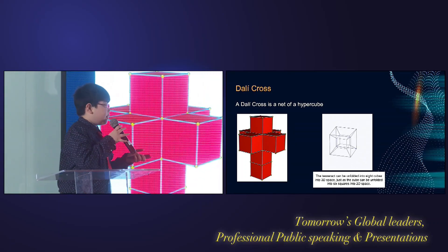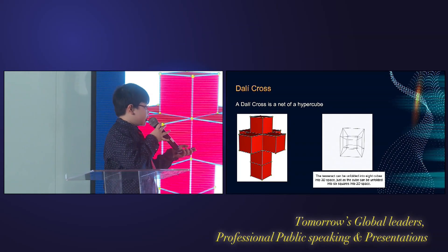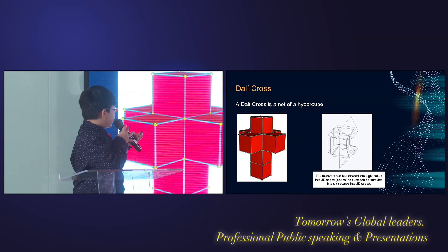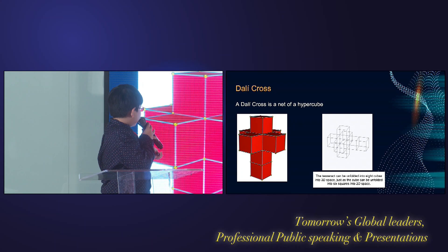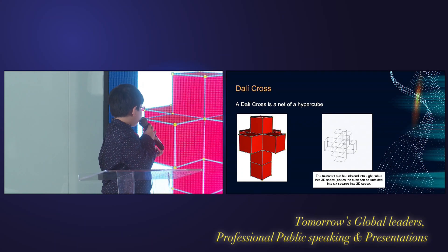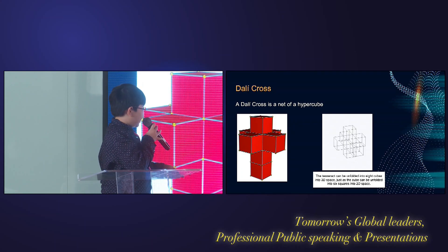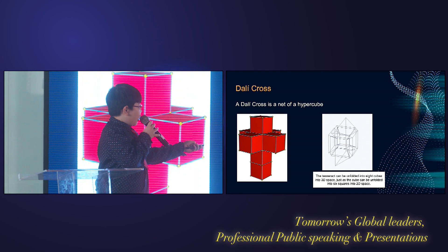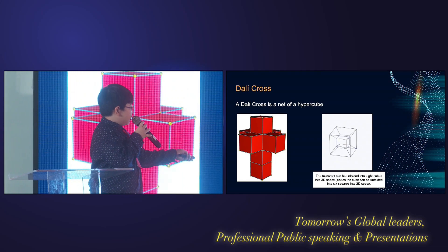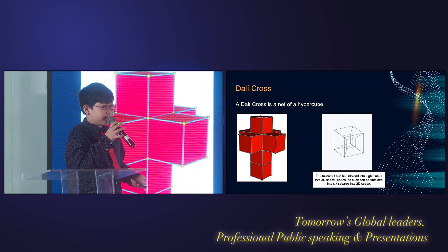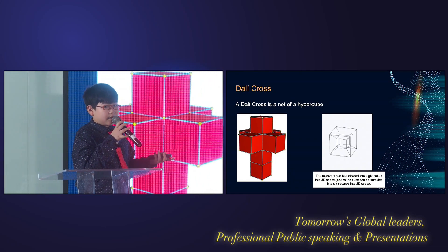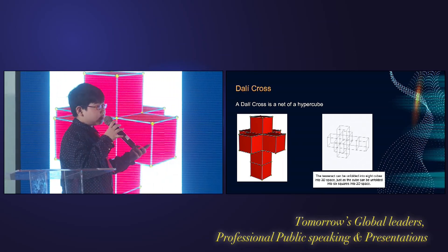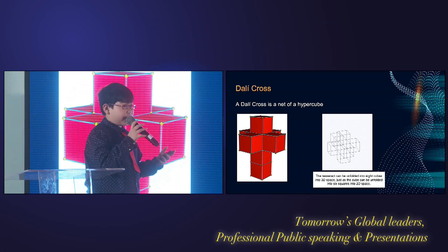So what if we unfold it into the third dimension? We get this net. This is the net of a hypercube, which is made of eight cubes — but one is hidden inside, so we cannot see it. Actually, all of these cubes have the same volume, even though they look a bit different.